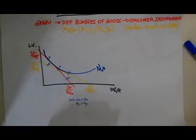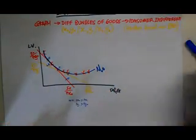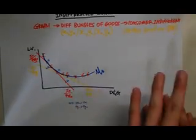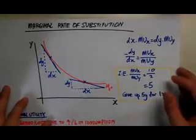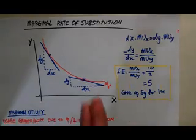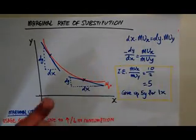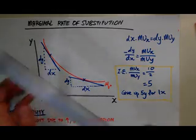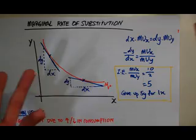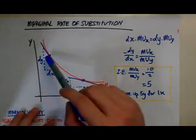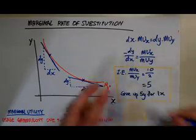What it means to be indifferent is: whether I'm at this point, this point, or this point — I'm equally happy. That's what it means to be indifferent between all these different bundles of goods. Now let's talk about the slope of the indifference curve, which is called the marginal rate of substitution. We measure the gradient of the curve by drawing tangents — put your ruler against the curve, draw one straight line, and find the gradient. The gradient of the slope is calculated by dividing the change in Y by the change in X.